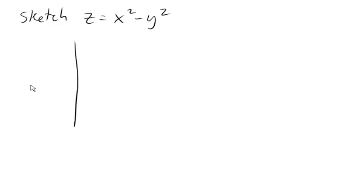So let's start by looking at traces in x and z, where y is equal to a constant. So if y equals 0, then z is going to be x squared, just x squared. And so we know that that looks like a parabola.